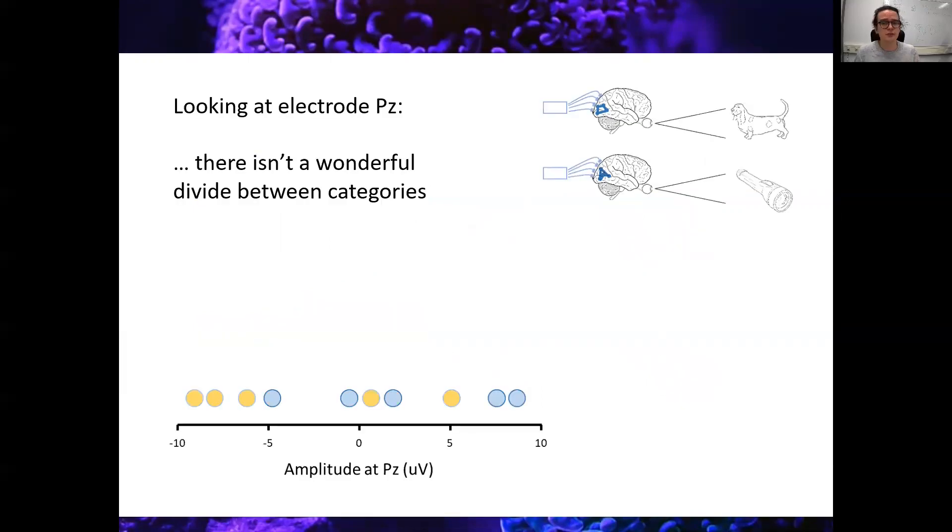We know what categories the images fall into, either animals or objects. We don't exactly know what pattern to look for right now. So what can we do about it? We can look at a single channel such as PZ in a sort of univariate ERP based analysis. But if we color code our data points where the yellow dots are animals and the blue dots are objects, well, it doesn't seem like a super clear division. No matter where we draw the hyperplane, the accuracy is not going to be great. So it seems that just looking at this electrode PZ, it's just not very helpful.